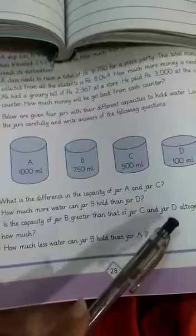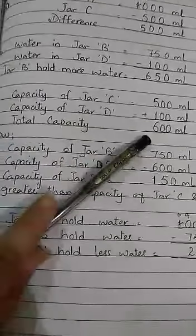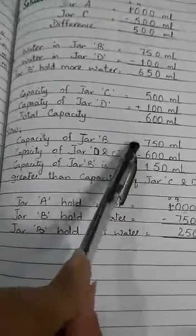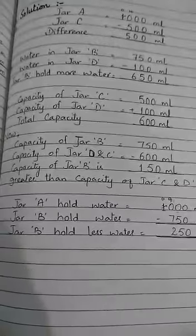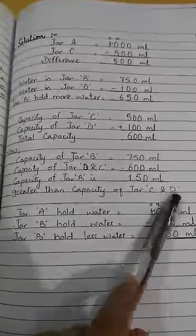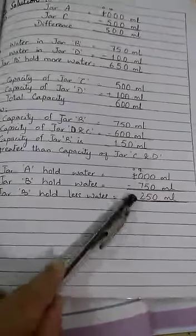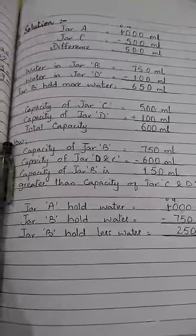You will see that jar B's value is also greater than the combined amount of jar C and jar D together. So, jar B's capacity is greater than jar C and jar D combined. Next, how much less water can jar B hold than jar A? You have to find jar A's capacity minus B. Jar A's capacity is 1000, B's capacity is 750 ml. This is very easy. Use the jar capacities to solve this.